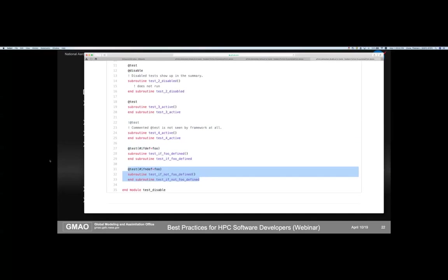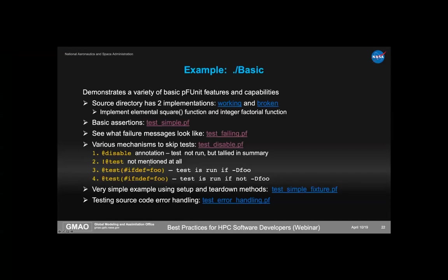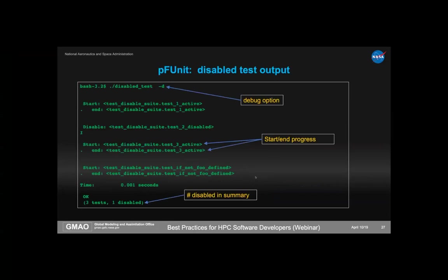When running disabled tests with debugging output, you see friendly start and end messages for each test. When the disabled test is reached, you get a notice that the test was disabled and an 'I' in the summary output. In the final summary, the count shows, for example, three tests ran and one disabled. Disabled is not a failure or error — it's just commentary so you're aware of it.